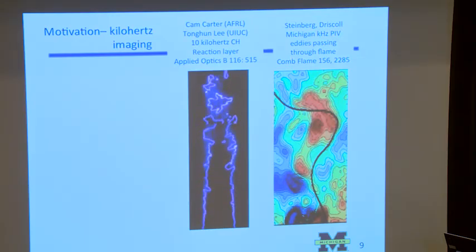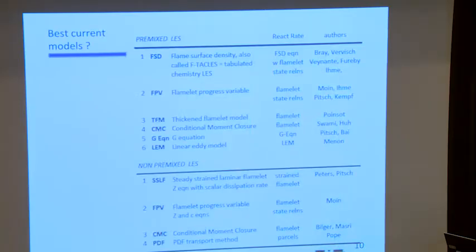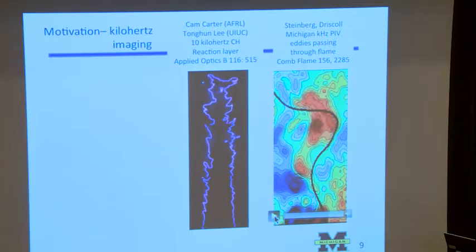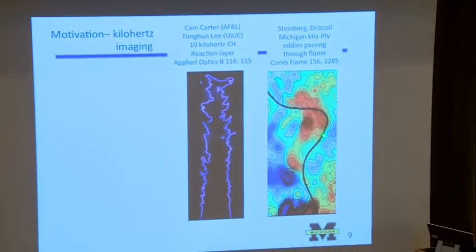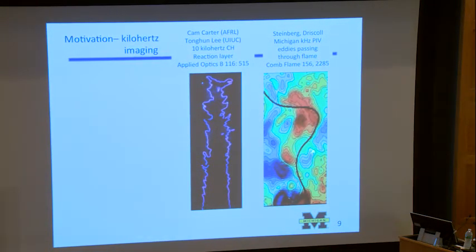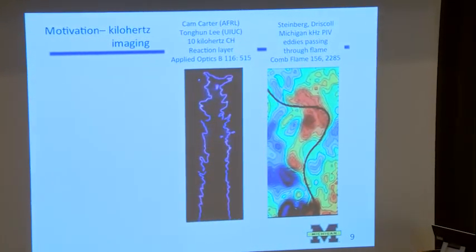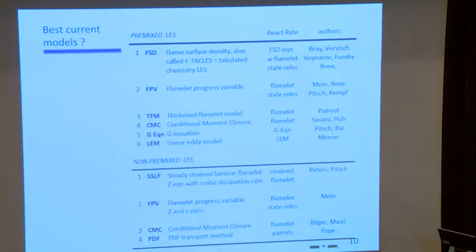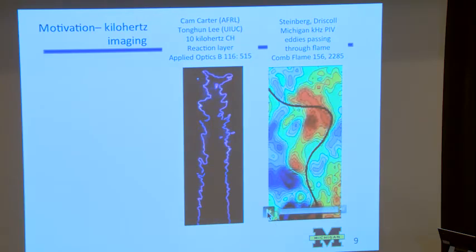And then this is a movie of a student, Adam Steinberg. He did this work at Michigan with me. And he's now a professor at the University of Toronto. He's doing much more difficult and better work now. But this is the first time anybody tried to image vortices going through flames. So he took a PIV, which is a velocity field imaging method. He determined what the flame boundary was because the particle density changes very abruptly right at the flame. So in this case, he used the change in the particle density to map out where the flame is. And then he used the velocity, the kilohertz of velocity field imaging to map out the vorticity field. And so the goal was to see turbulent eddies going through the flame.